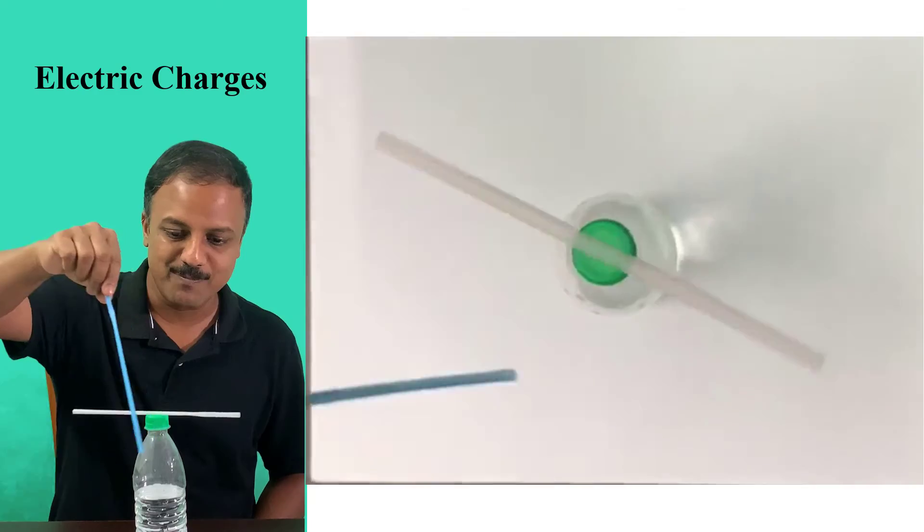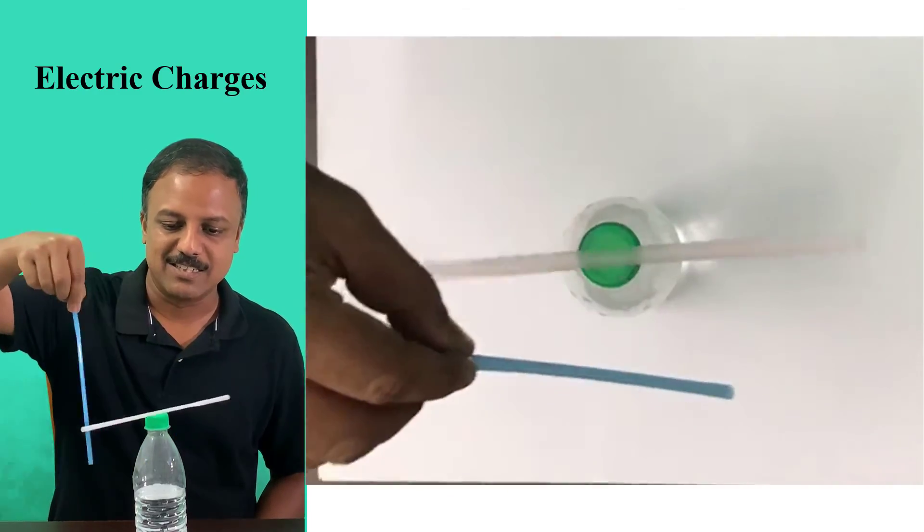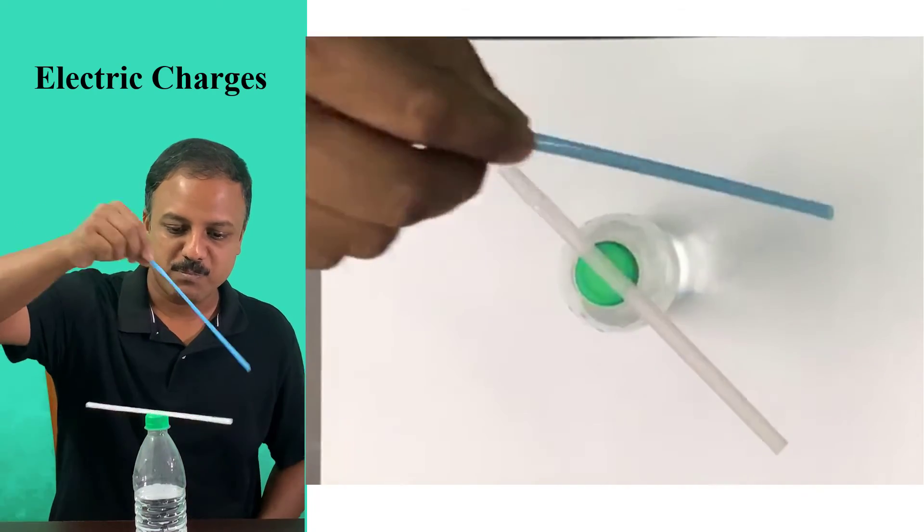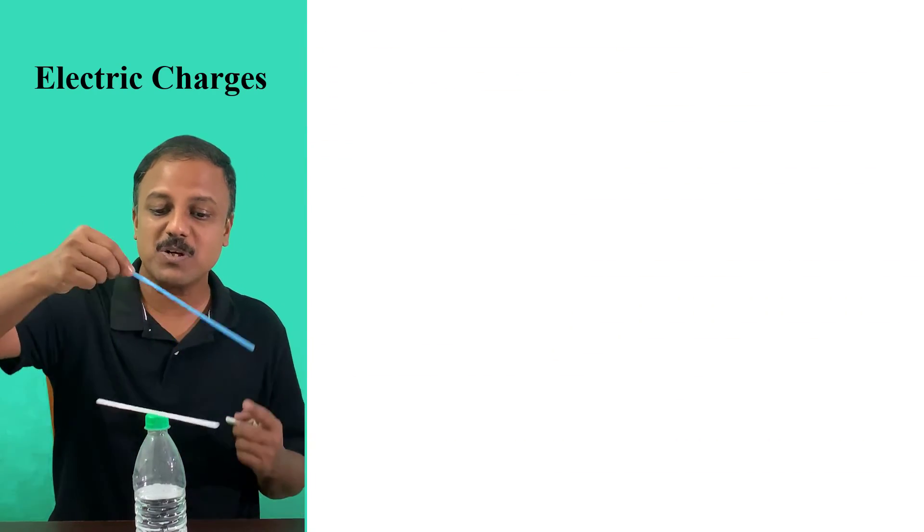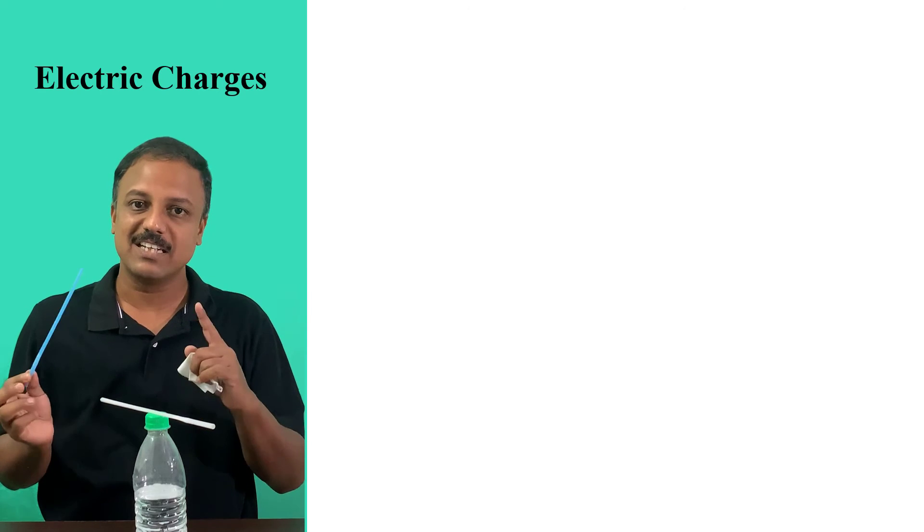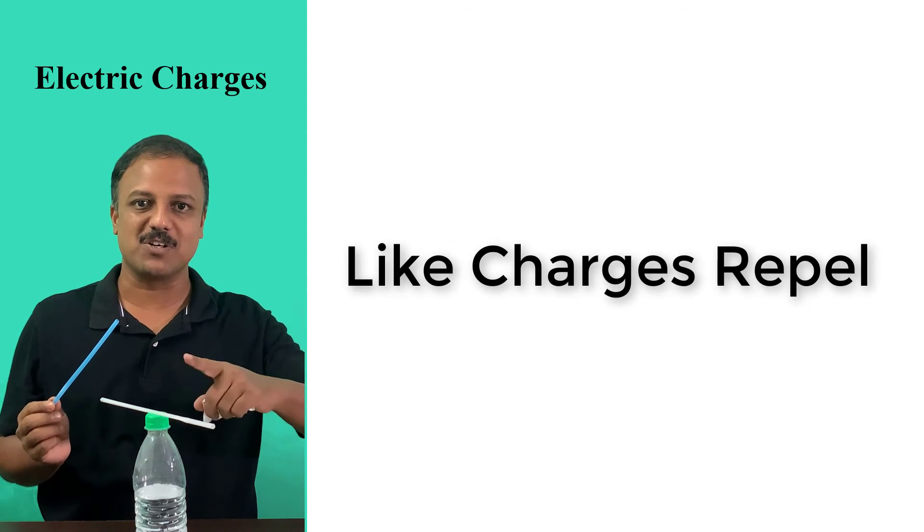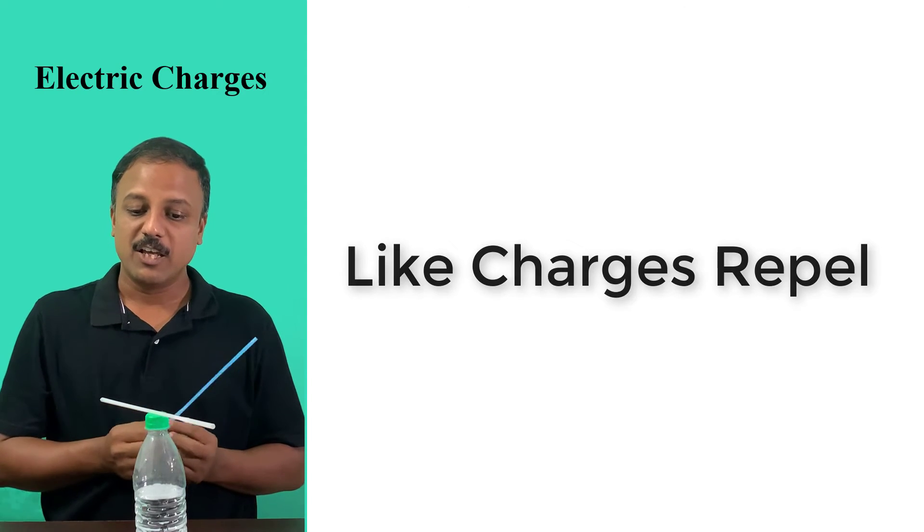So they repel. So you can see this. You can see the distance between those two straws. They perfectly repel each other. So this is what we say, like charges repel each other. So you have similar type of charge on both these straws and therefore they repel.